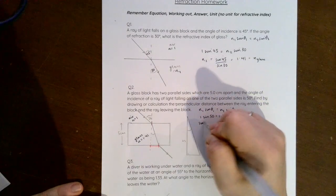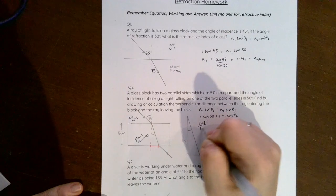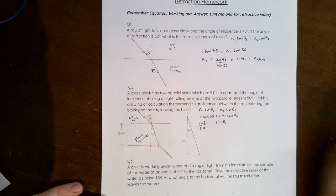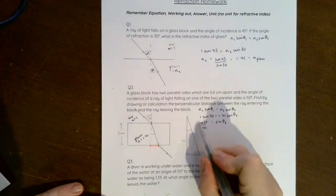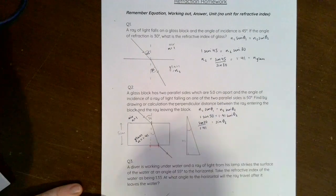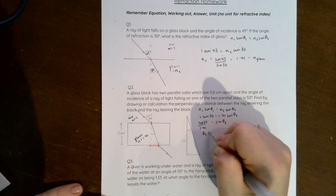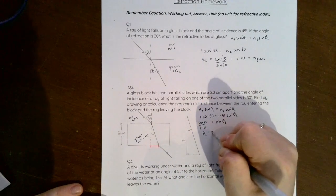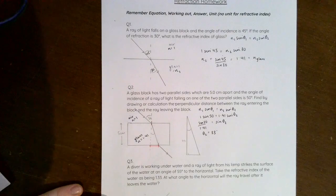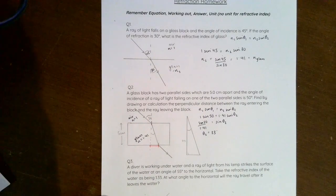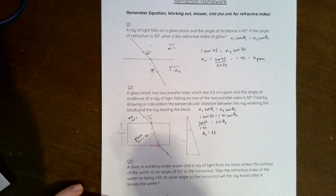So sin 50 over 1.41 is equal to sin θ₂. Now if I calculate this and then do sin to the minus 1, I will get θ₂ and θ₂ is worked out to be 33 degrees. If you've got trouble for that you need to email me and I will talk you through that.